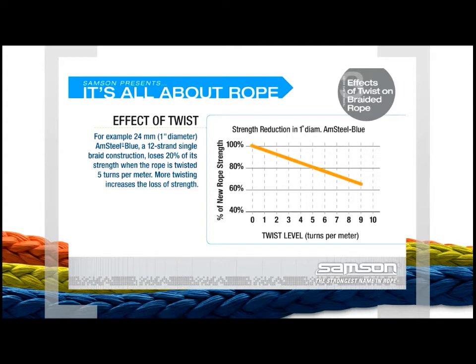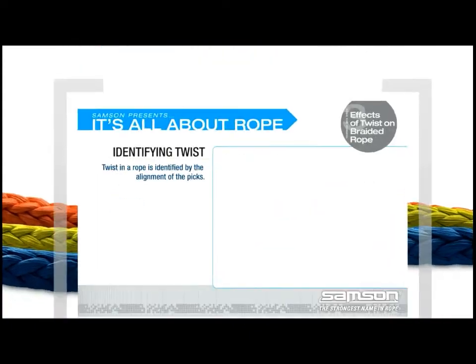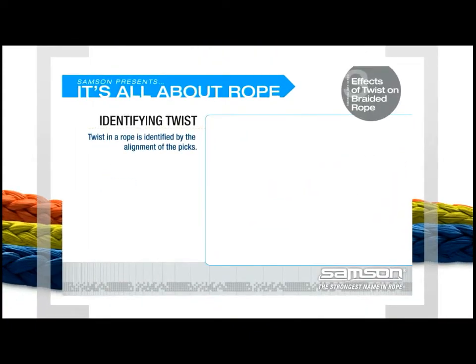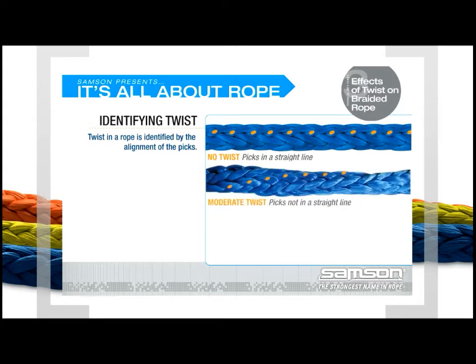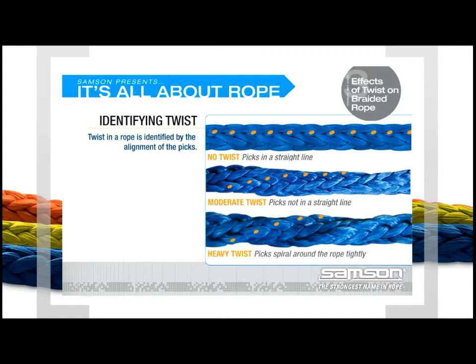Identifying twist in a braided rope is relatively easy. Simply follow a single line of picks or crowns down the length of the rope. If the picks form a straight line parallel to the length of the rope, there is no twist. If the line of picks spirals around the circumference of the rope, that section of rope is twisted.